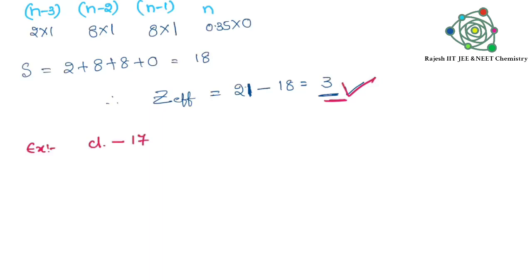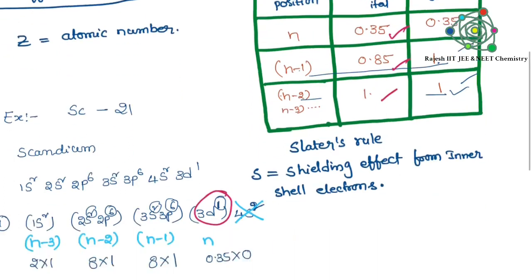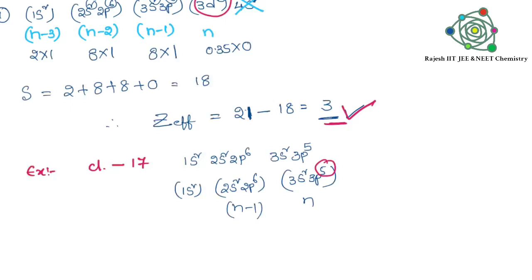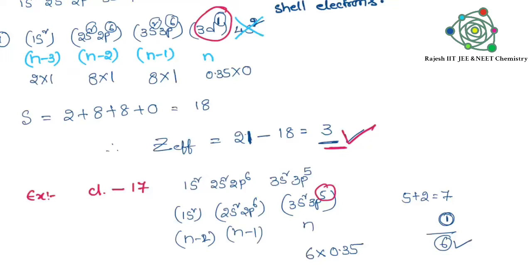Now here, let's look at chlorine — chlorine with atomic number 17. First we write the electronic configuration, which ends as 3s2 3p5. Now we need to make them into groups: 1s2 is one group, 2s2 2p6 is one group, and 3s2 3p5 is one group. The last electron is in the p orbital. We give numbering n, n-1, n-2. In the last group there are total 7 electrons, and 1 is under observation.